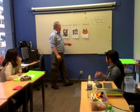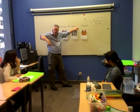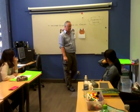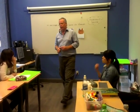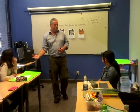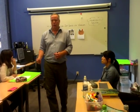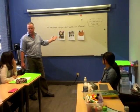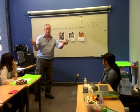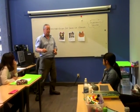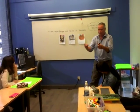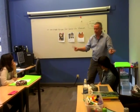My very eager mother just served us noodles. Now we've got our sentence. This sentence is a mnemonic device — it's going to help you remember some very, very important information. Repeat after me: My very eager mother just served us noodles. My very eager mother just served us noodles. Great, one more time — my very eager mother just served us noodles. Lovely.